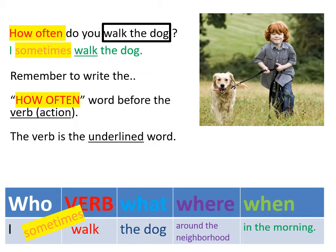Chúng ta quay trở lại ví dụ đầu tiên: How often do you walk the dog? Bạn dắt chó đi dạo bao lâu một lần? Chúng ta trả lời: I sometimes walk the dog. Từ 'walk' được gạch chân vì đó là động từ chính, và chúng ta đặt 'sometimes' ở phía trước 'walk'. Cho nên khi viết bài, chúng ta cần đặt từ chỉ tần suất — từ dùng để trả lời cho 'how often' — ở phía trước động từ chính. Ví dụ: I sometimes walk the dog around the neighborhood in the morning.